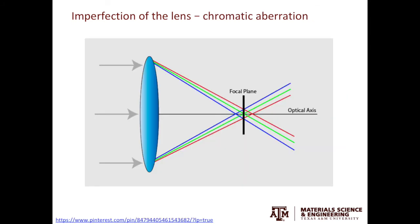The third type of the lens imperfection is the chromatic aberration. Chromatic means color. Let's look at the visible light first. Red, green, and blue light, they have different wavelengths. Even if the lens is perfect, when they go through the lens, they will have different focal planes or focal points.